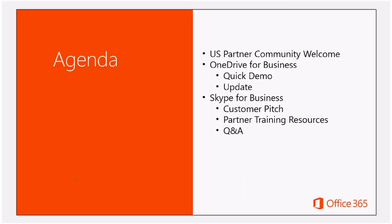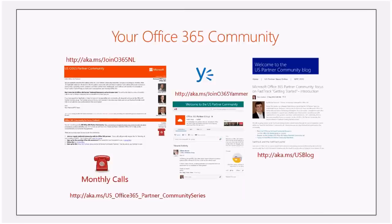There should be some time left for Q&A at the end. Here are some ways to get in touch with our community focused on Office 365. You'll find information on building your Office 365 cloud practices, training, and other resources. You can sign up for the newsletter, which comes out around the middle of the month, and join the Yammer group — specifically the Office 365 partner group on the US Partner Community Yammer network. You can also find posts on OneDrive for Business, Office 365, and Azure on the partner blog.